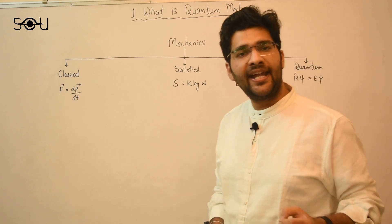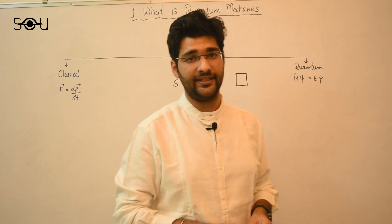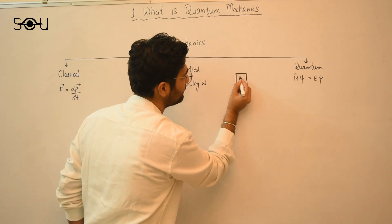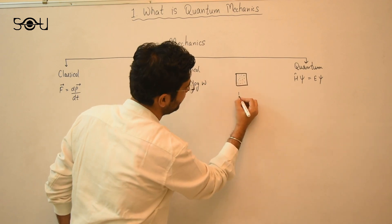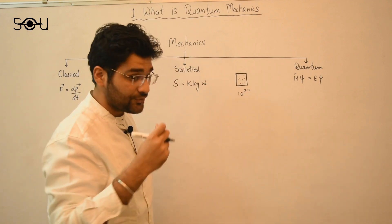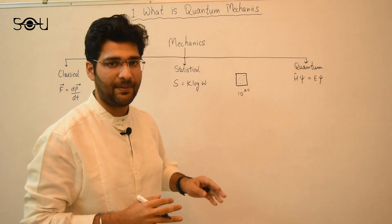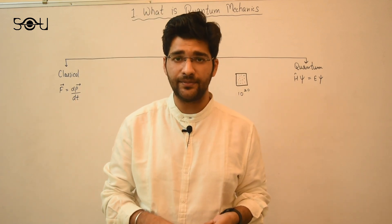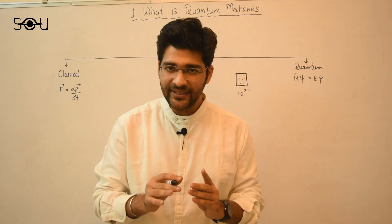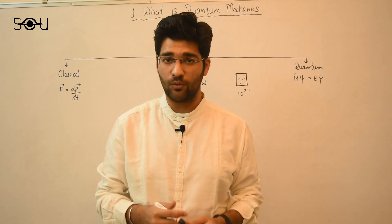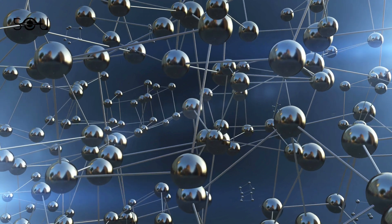Second is statistical mechanics. Statistical mechanics dives deeper — it says that if you want to study this box, you have to study the motion of each and every particle that comprises it. Suppose there are 10 to the power 20 particles present inside this box; you would need to know all the parameters — momentum, velocities, and energies — of all those particles. Doing that is practically impossible because there are so many degrees of freedom involved.